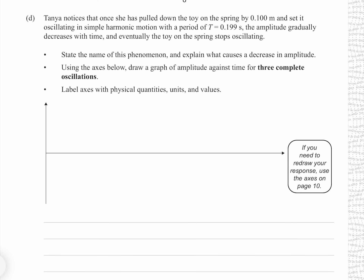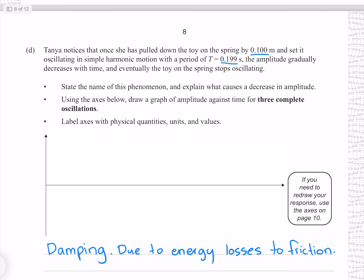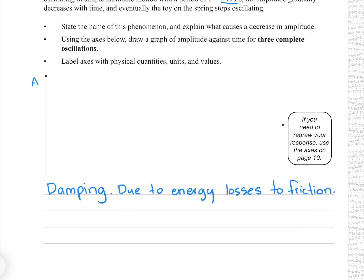Tanya notices that once the toy is set oscillating in SHM with period 0.199 s, the amplitude gradually decreases with time and eventually the toy stops oscillating. State the name of this phenomenon and explain what causes the decrease in amplitude. This is called damping, and is due to energy losses to friction. Drawing the graph: the spring was pulled down 0.1 m, so we start from there. The key thing to show is that the period (wavelength) does not change while amplitude decreases with each oscillation.